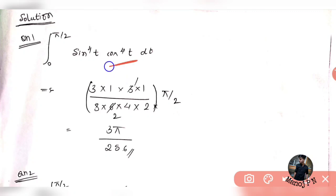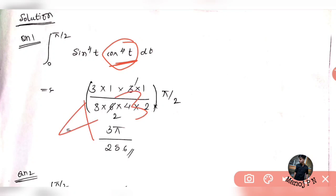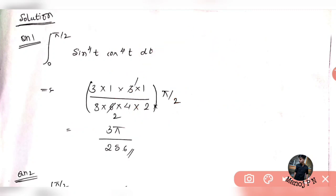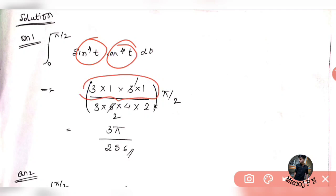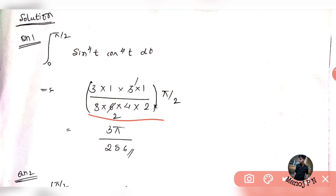Similarly, the next power is also 4, and the odd upcomings are again 3 and 1. So I am going to multiply these two. This gives the odd upcomings for the numerator. E4 is 3 into 1, so 3 into 1 into 3 into 1 — that will be the odd upcomings. Coming to the numerator, I will be writing even upcomings.